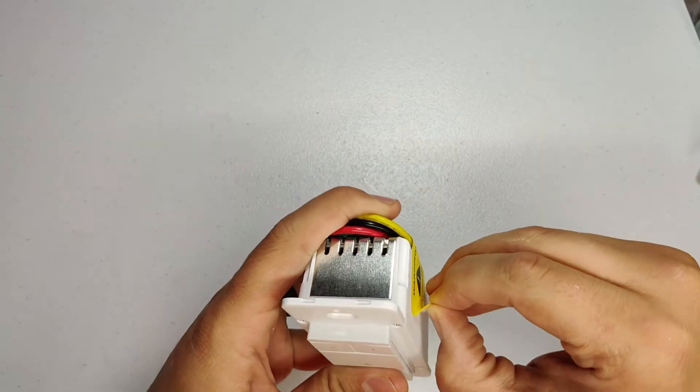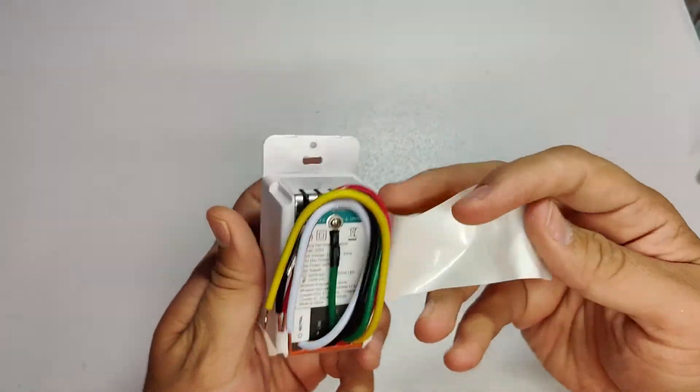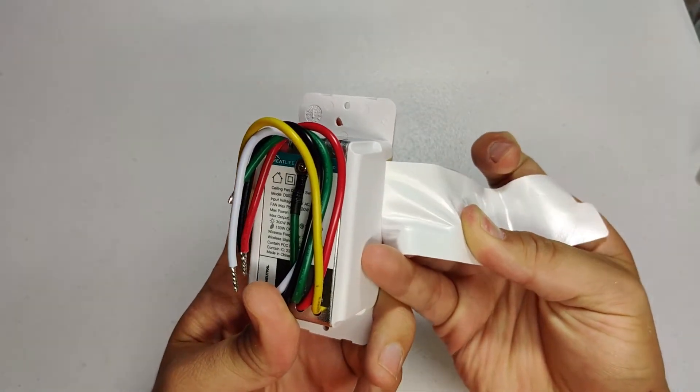At first glance it may look like there's a lot of wires coming out of the back of this thing but don't worry they're all neatly labeled and they even come with little sticky labels you can put on the wires that are in your switch box.